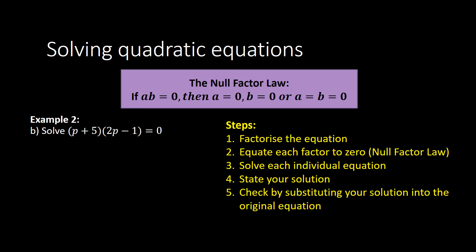Let's look at one more equation — a little bigger but that's okay. It's already factorized, so we go to step 2: equate each factor to 0. Our factors are (p plus 5) and (2p minus 1), giving us p plus 5 equals 0 or 2p minus 1 equals 0. Step 3: for p plus 5 equals 0, subtract 5 from both sides to get p equals negative 5. For 2p minus 1 equals 0, add 1 then divide by 2 to get p equals one half. Therefore p equals negative 5 or one half.